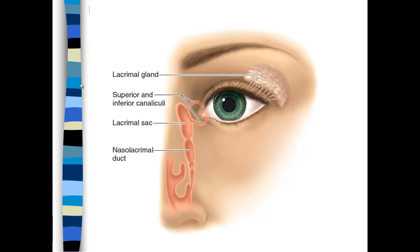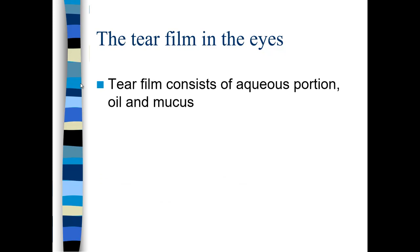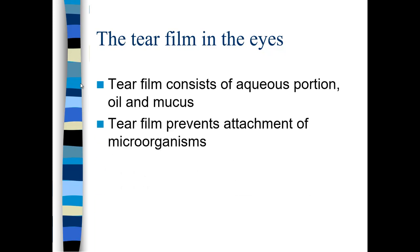In terms of the architecture for flushing away microbes and producing tears, you have the lacrimal gland located to the upper outside of your eye. Then you have the superior and inferior canaliculi, which drain off tears into the lacrimal sac and nasolacrimal duct, draining tears into your sinuses. The tear film in your eyes is really important — it has water, an oily phase, and mucus as part of your mucus membranes. This flushes away microorganisms and prevents their attachment.